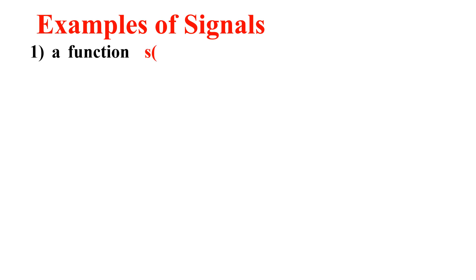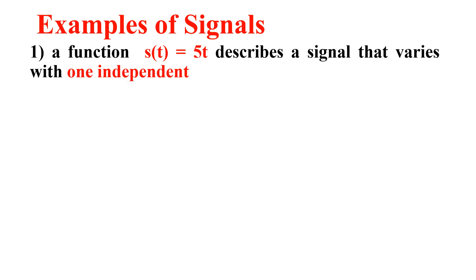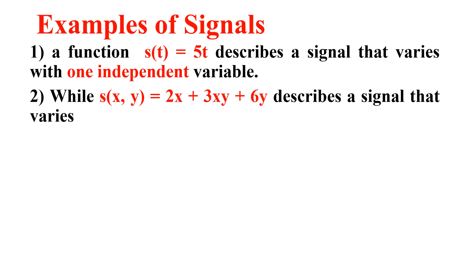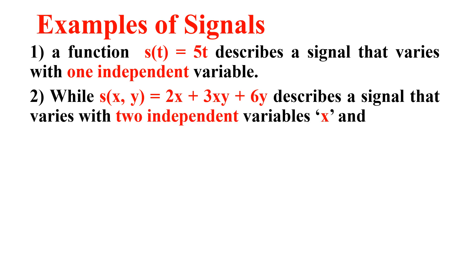Now let me consider examples of signals. The first example: consider a function s(t) = 5t. This describes a signal that varies with one independent variable, t. The next example: s(x, y) = 2x + 3xy + 6y. This describes a signal that varies with two independent variables, x and y.